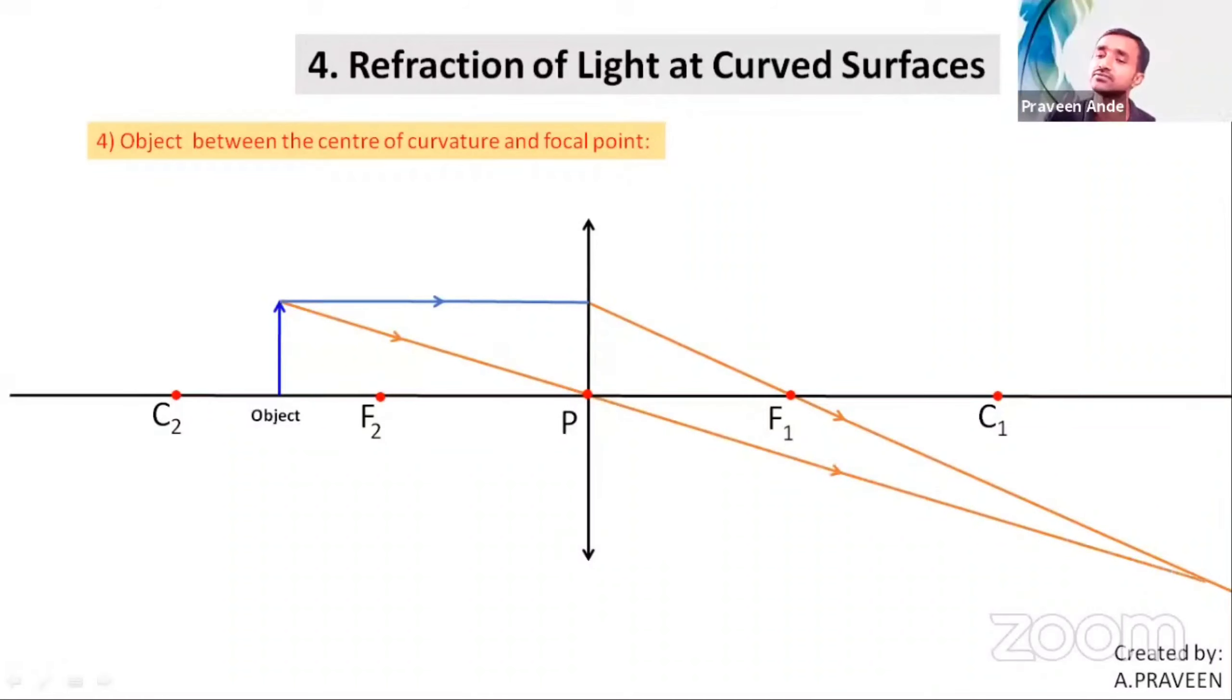Now look at where they are going to meet each other. I got the converging point after refraction. Yes, I have a converging point. So identify that point. From there you have to draw a perpendicular line onto the principal axis.